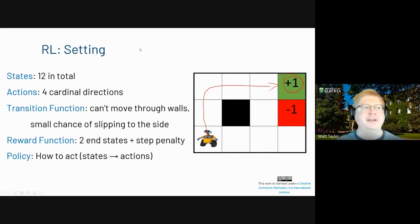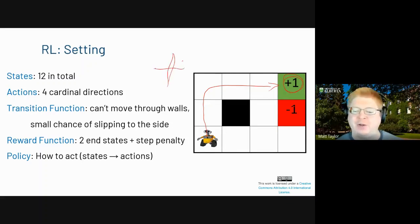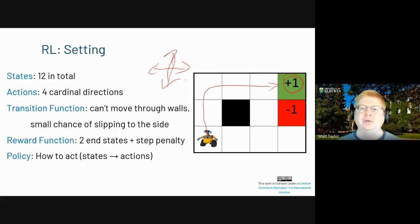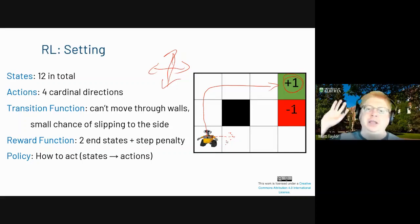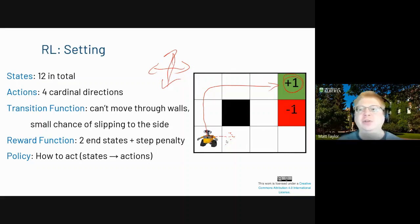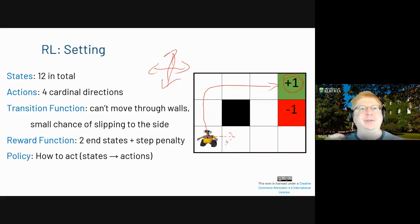How do we think about this? There are 12 states — 12 places I could be. I could go up, down, left, or right, and I can't go through walls, but there's a small chance I could slip — if I'm trying to go up, there's a small chance I might slip and go right. There's a reward function: I want to get to the plus one, but I could hit the minus one. There's also a small step penalty so I want to get there quickly. The policy I want to learn maps states to actions.